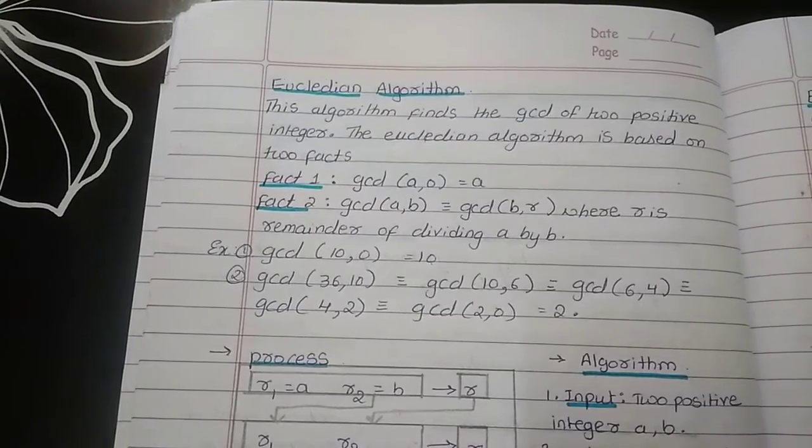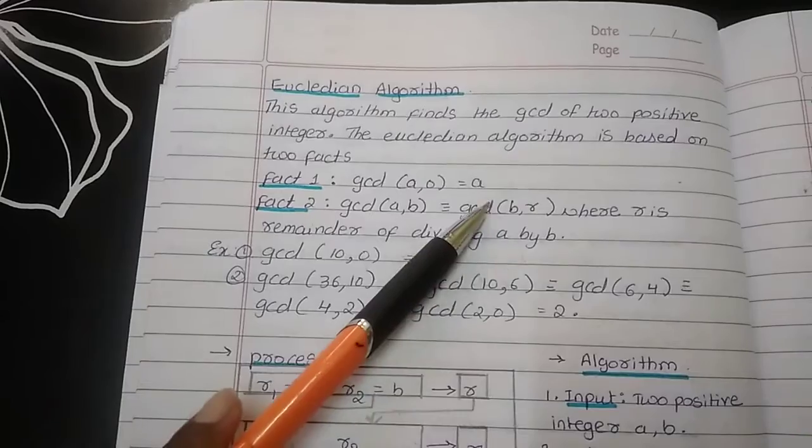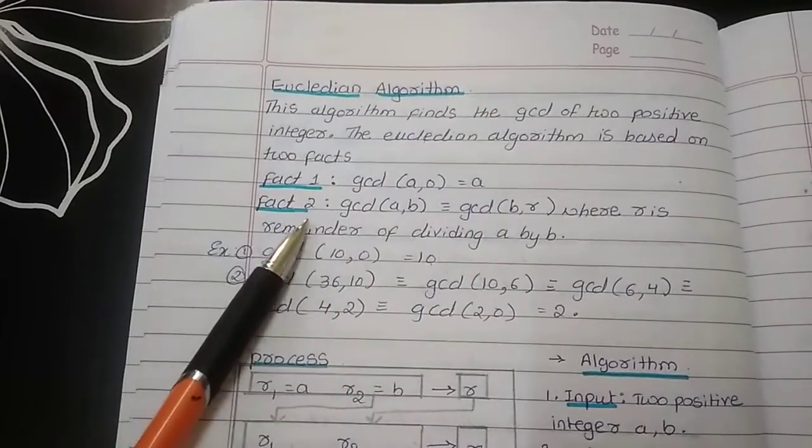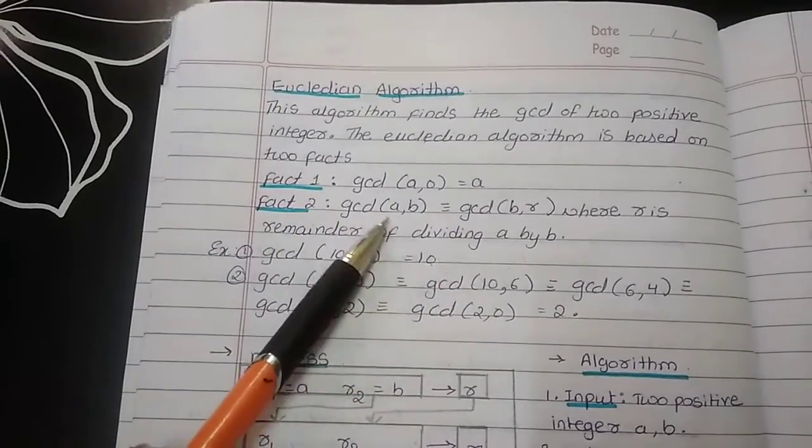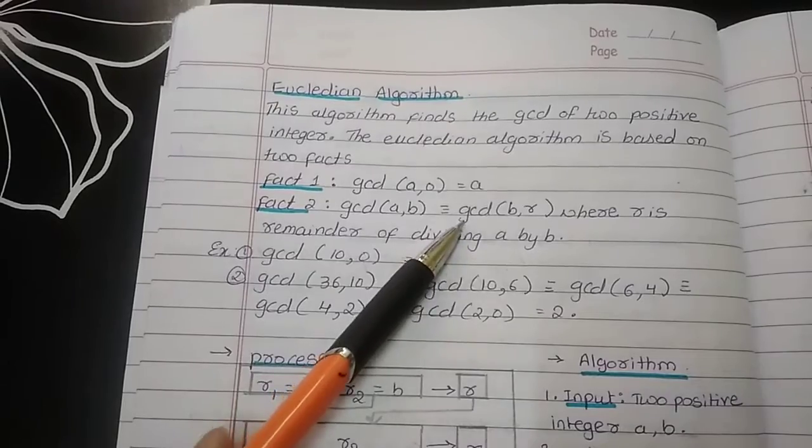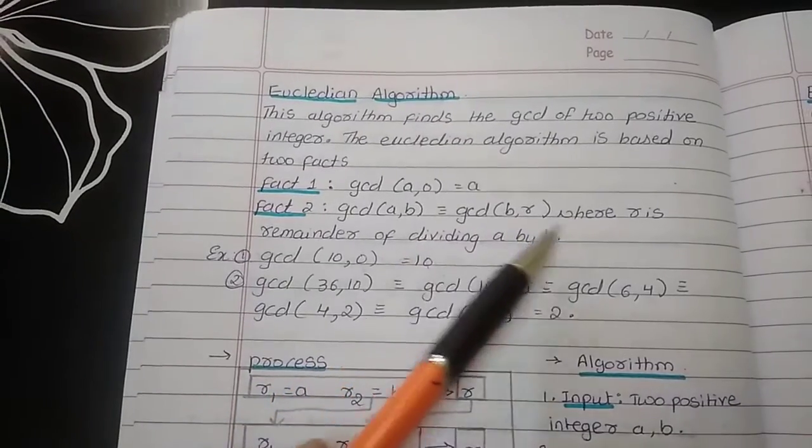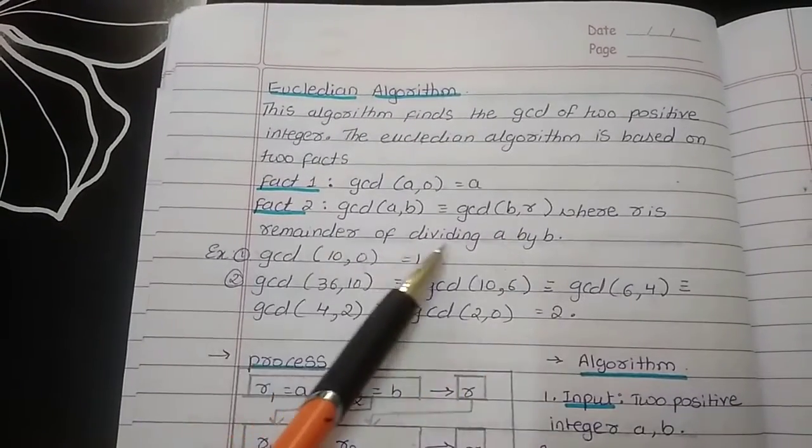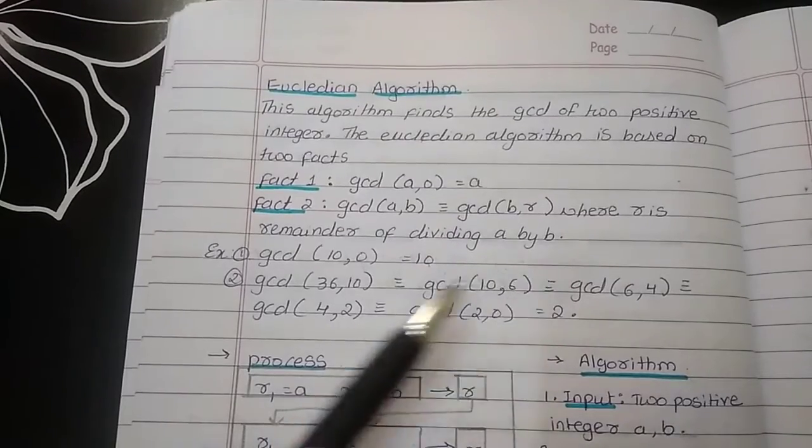The first fact says the GCD of A and 0 will be A, and the second fact states that GCD of A, B is equivalent to GCD of B, R where R is the remainder of dividing A by B.